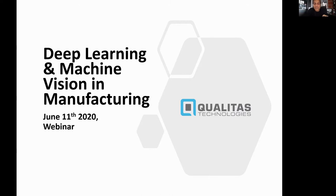Good evening everyone and welcome. This is the third part of a monthly series and I'm glad to have all of you take some time off — it's Friday evening in India, and Christopher, I know you're from the US, so welcome. This session will be about 60 minutes, covering deep learning and machine vision in manufacturing, with questions towards the end. Please feel free to unmute and ask questions.